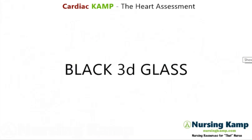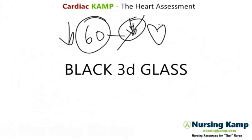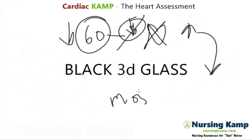BLACK 3D GLASS covers all the reasons why a person's heart rate will be less than 60, and that's problematic because the heart generally doesn't want to decrease. It doesn't want to slow down — it wants to increase generally as an underlying cause, and that is covered in my 'most patients do wish' lecture where I talk about all the reasons why a high heart rate occurs.